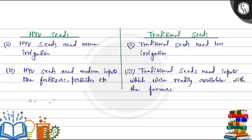Point No.2: HYV seeds need more irrigation. Traditional seeds, on the other hand, need less irrigation.